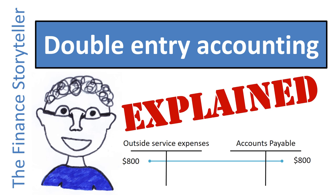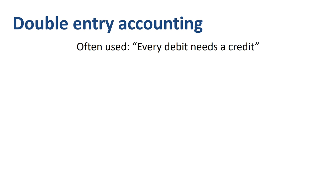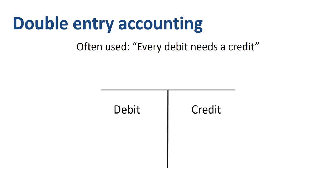What is double entry accounting? Double entry accounting, or double entry bookkeeping, can be explained in several ways. Perhaps the easiest way to explain it is to say that every debit needs a credit. When making accounting journal entries, the debits go on the left and the credits go on the right.